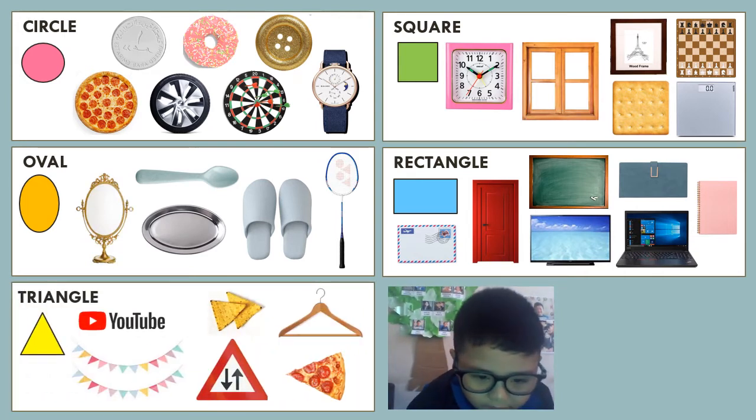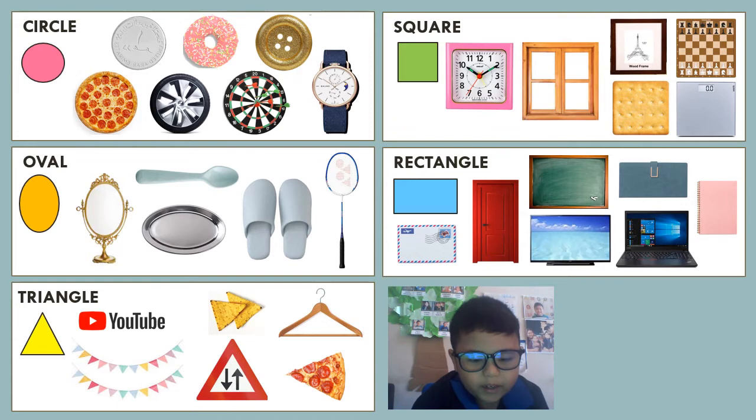Next is a triangle. It has three straight edges and three corners. We also see triangles everywhere. Examples are the road signs, party panels, the slice of pizza, and even the YouTube logo.